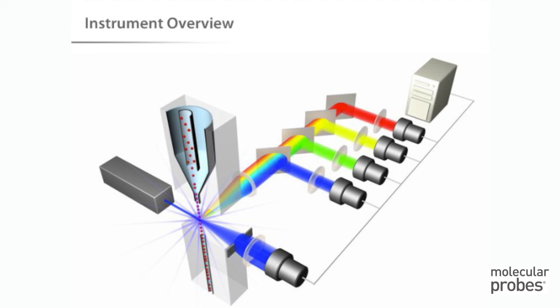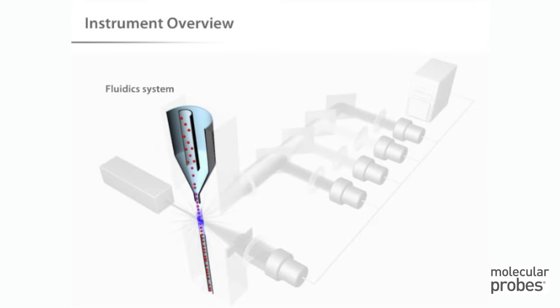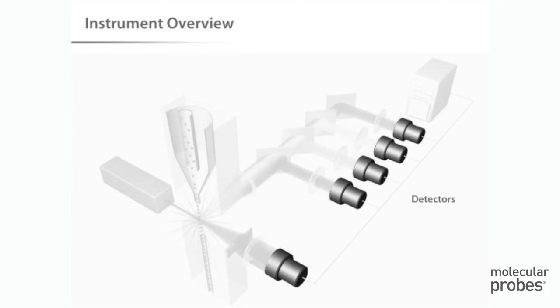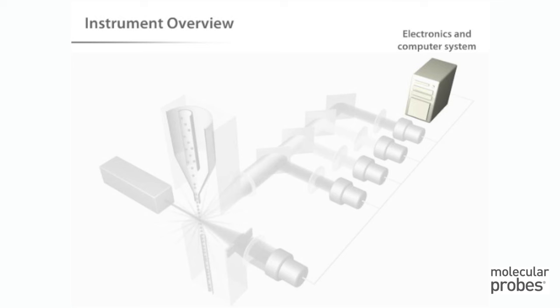This view shows the primary systems of the flow cytometer schematically. These are the fluidic system, which presents samples to the interrogation point and takes away the waste, the lasers, which are the light source for scatter and fluorescence, the optics, which gather and direct the light, the detectors, which receive the light, and the electronics and the peripheral computer system, which convert the signals from the detectors into digital data and perform the necessary analyses.